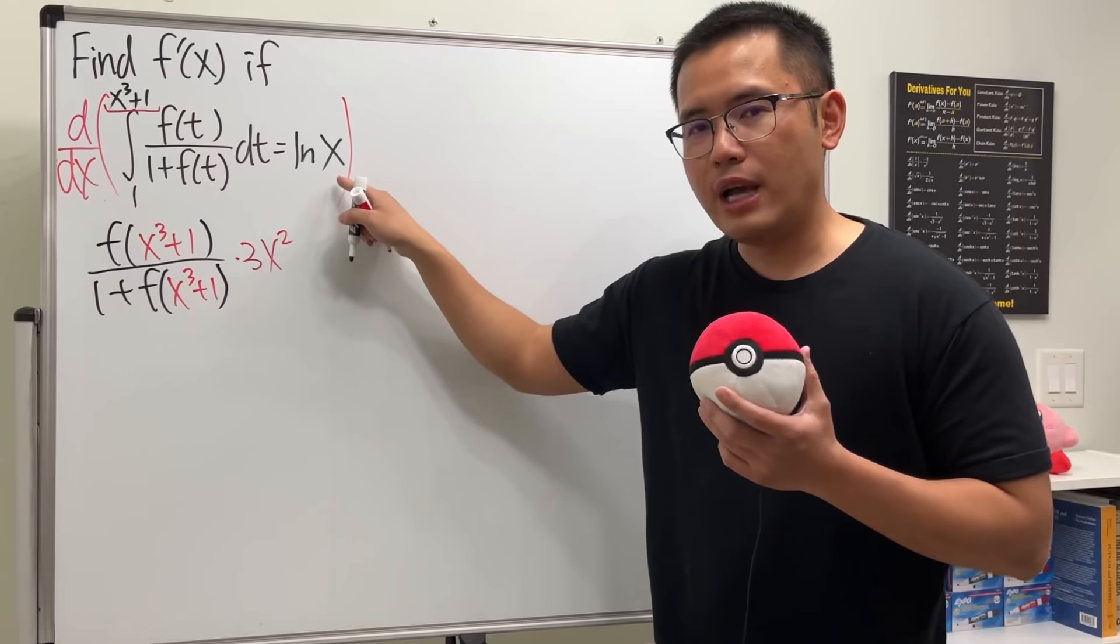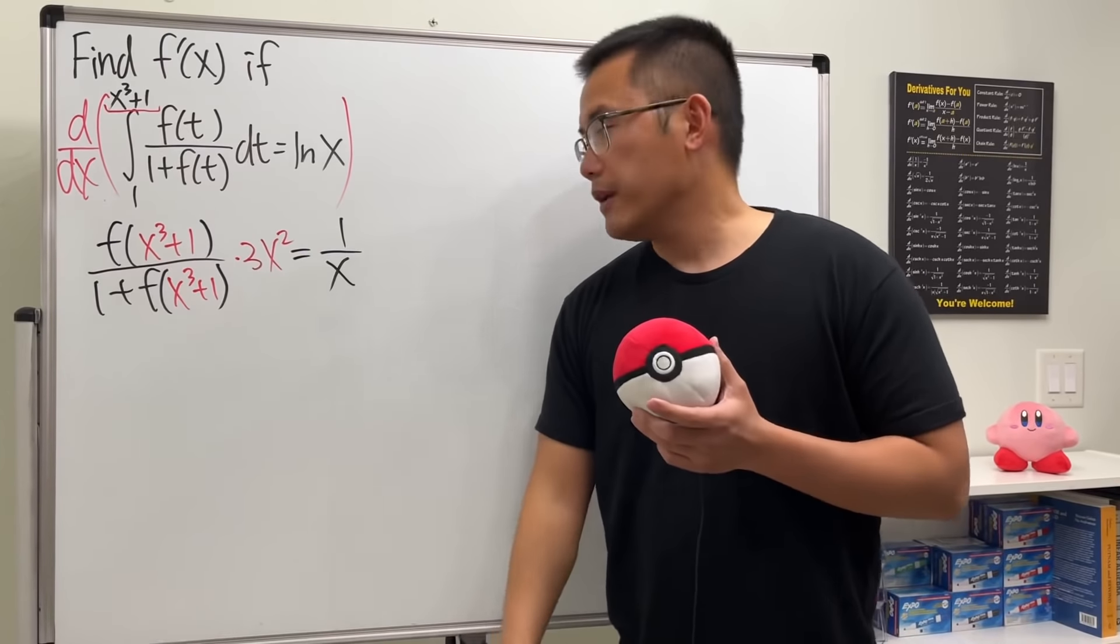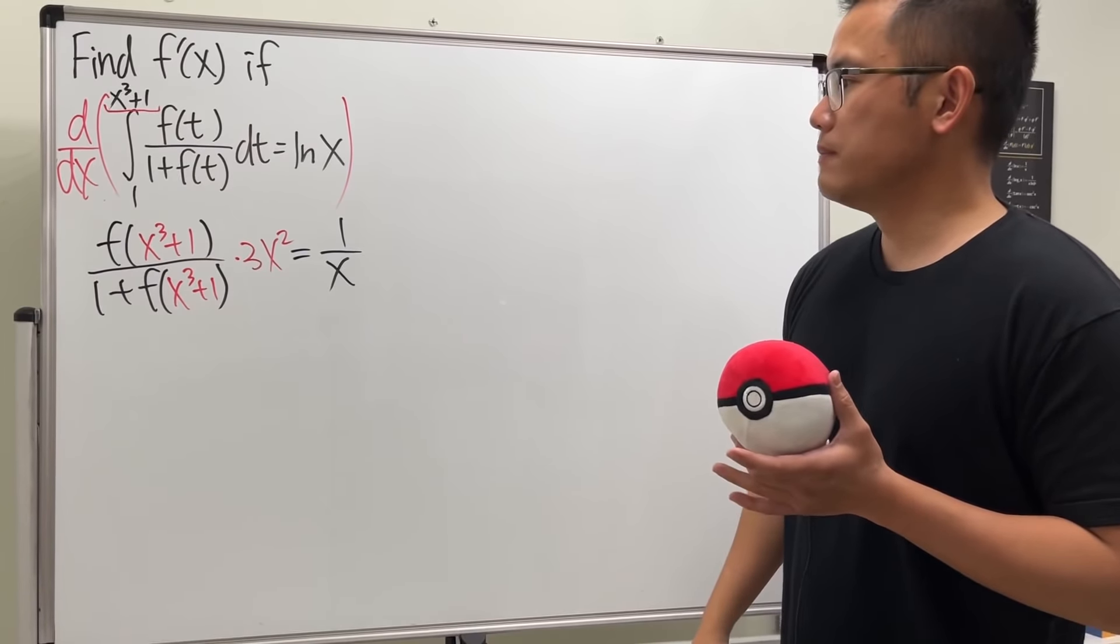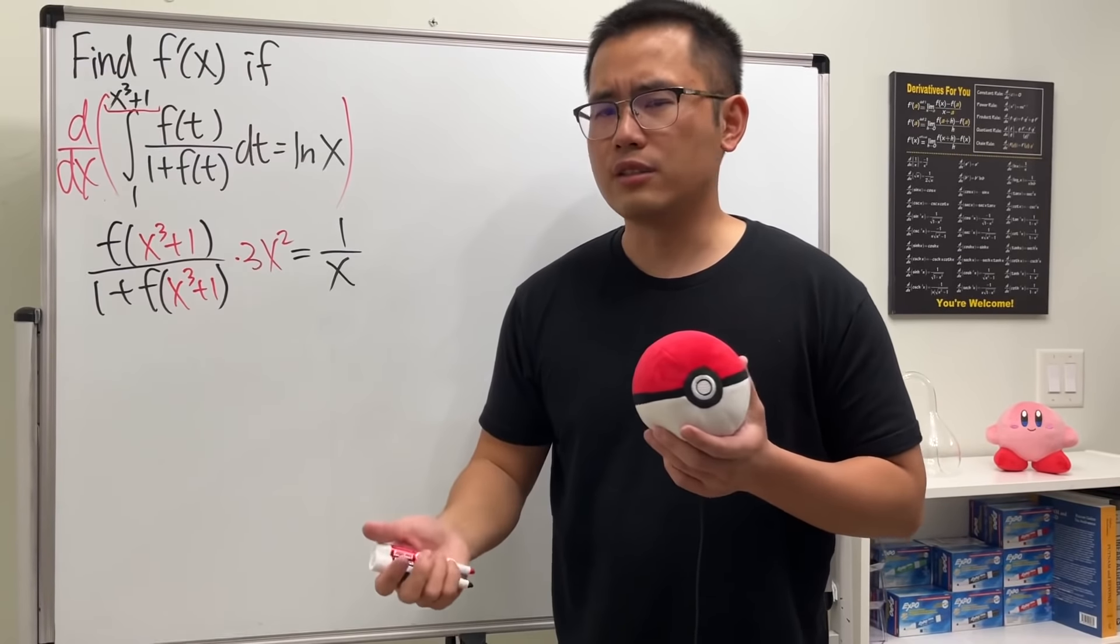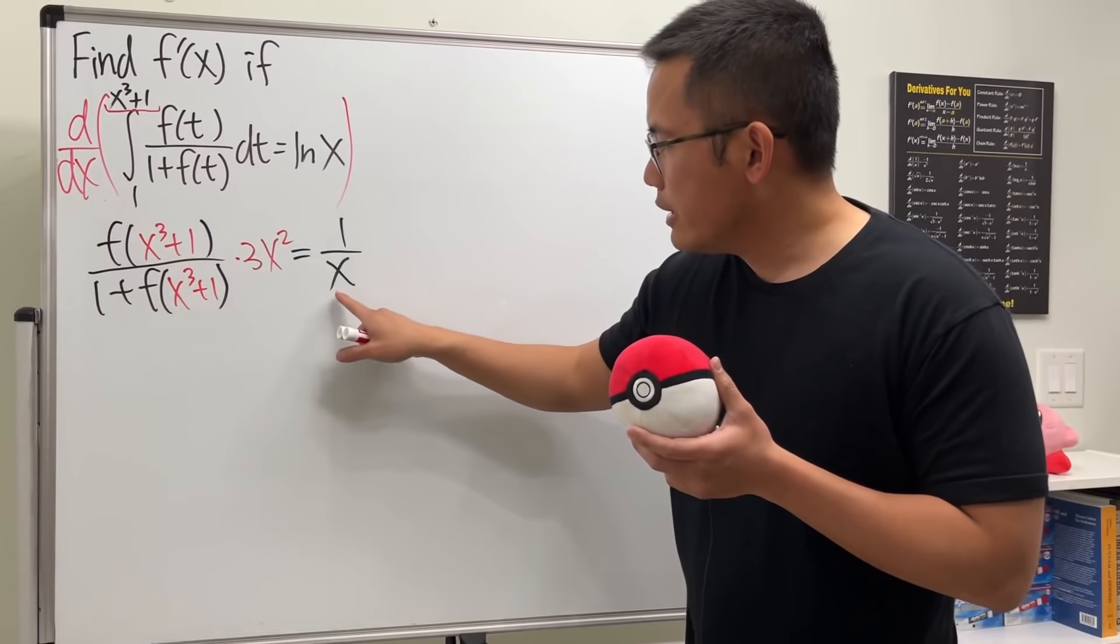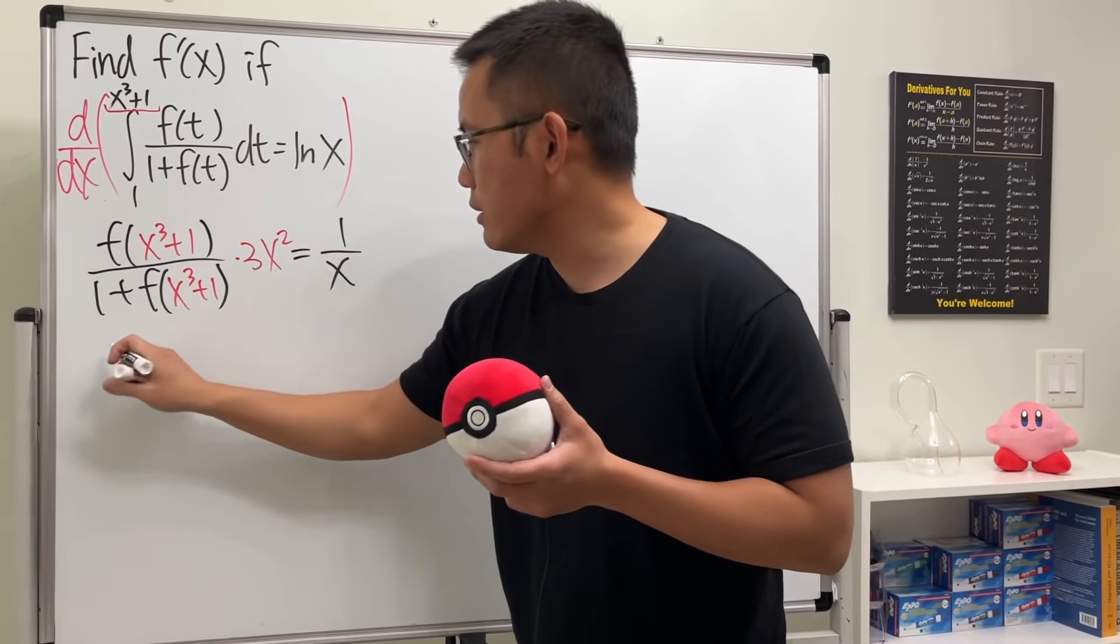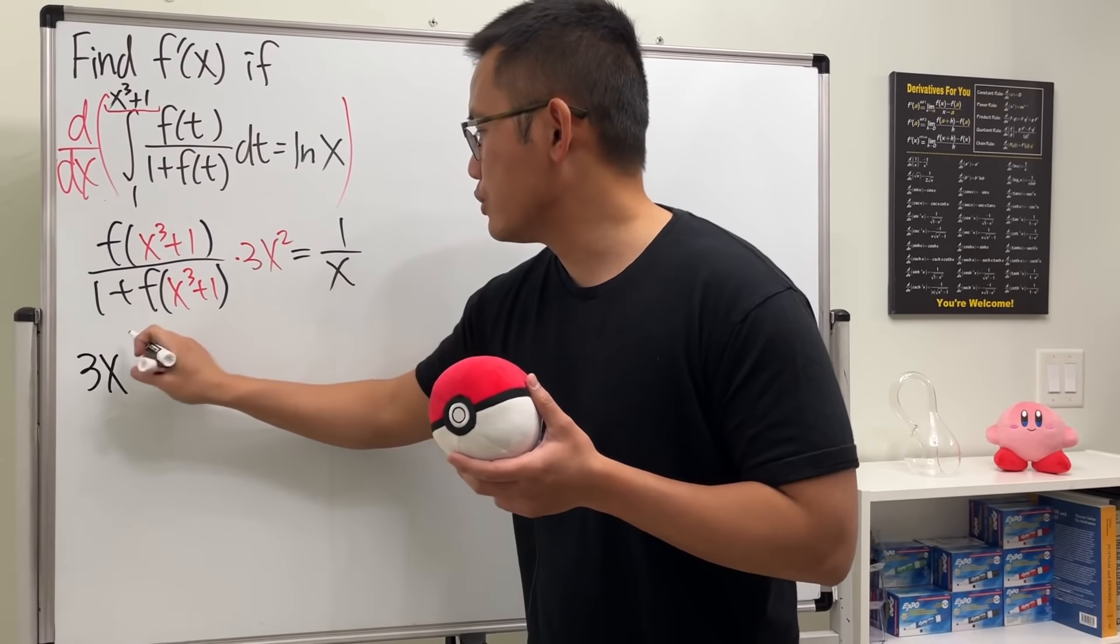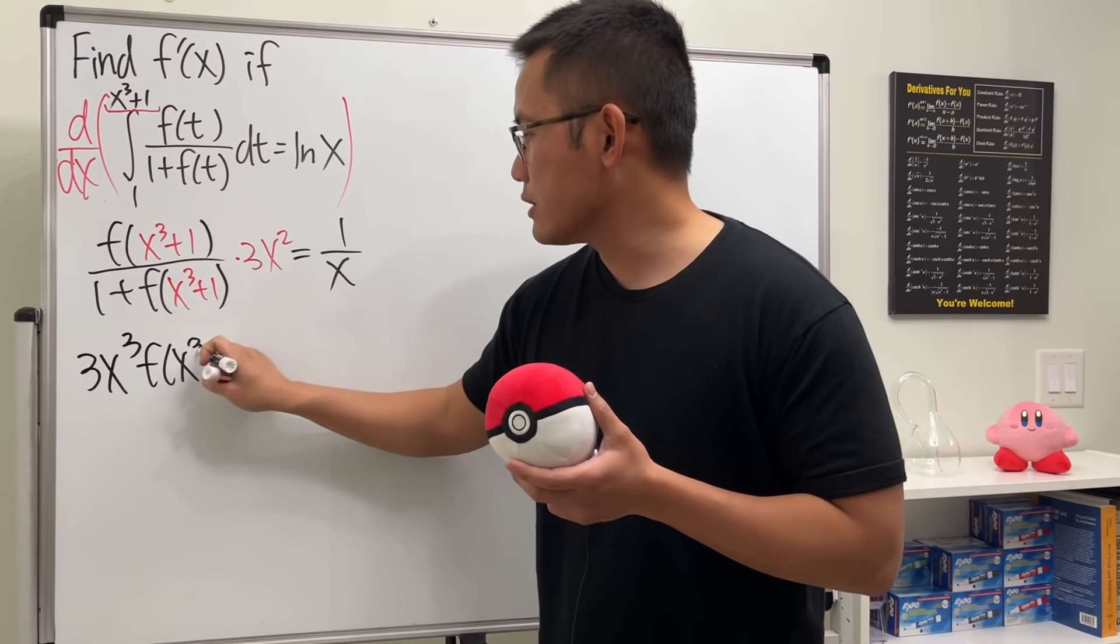And then, of course, we will have to differentiate ln(x), which is just 1/x. Okay, now, what do we do next? Well, we are trying to get f'(x). So let's just go ahead and solve for the function, and then differentiate it, and that'll be it, right? So let me just multiply the x on both sides. So we will get 3x^2 times x, which is x^3 now, and then multiply by that, which is f(x^3 + 1).